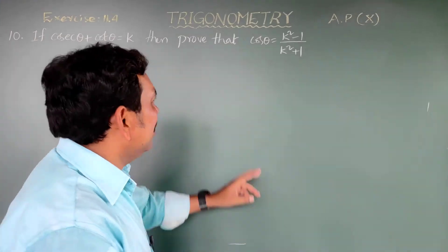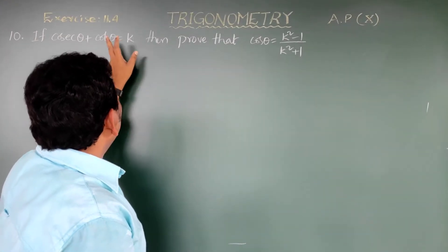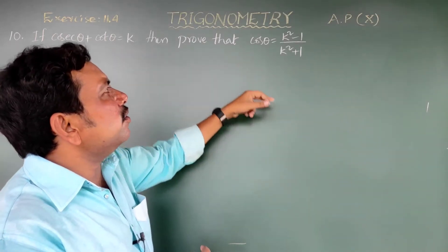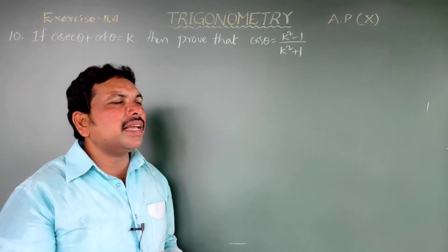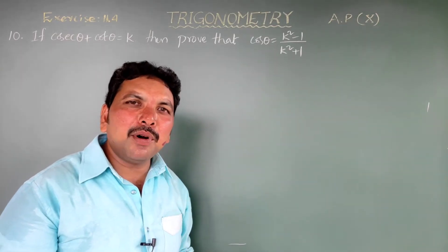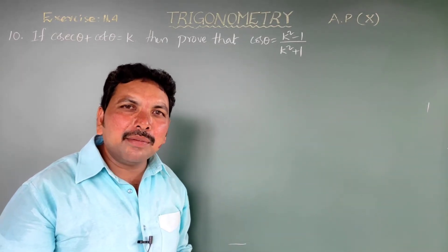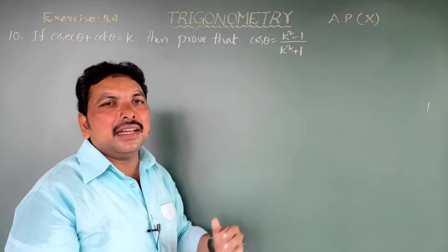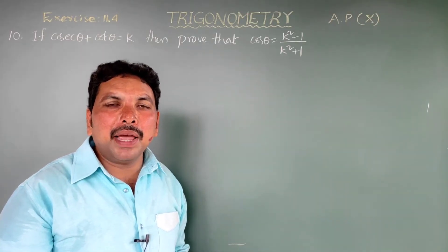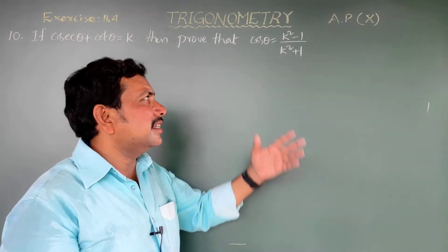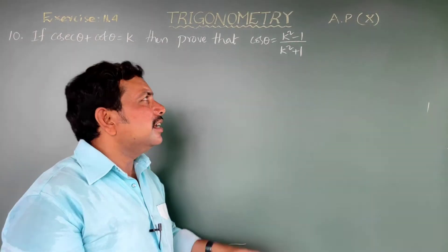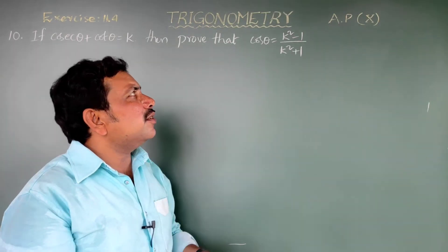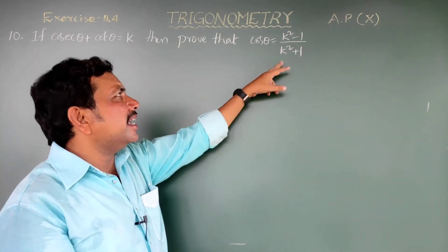This is the final question in Exercise 11.4: if cosecant theta plus cot theta equals k, then prove that cos theta equals (k square minus 1) by (k square plus 1). This is very very important for the final public examination in 10th class — it appears in the paper every year. Listen carefully.